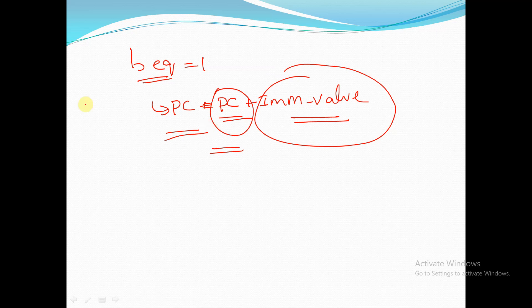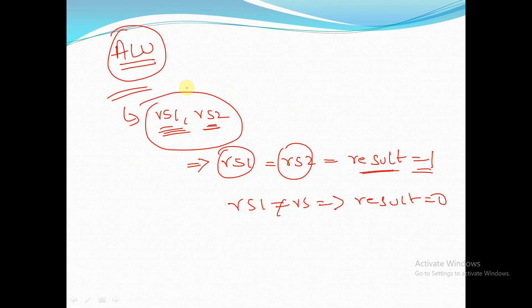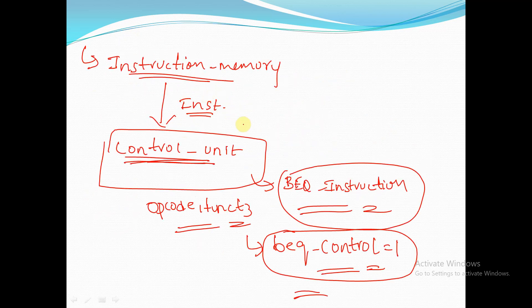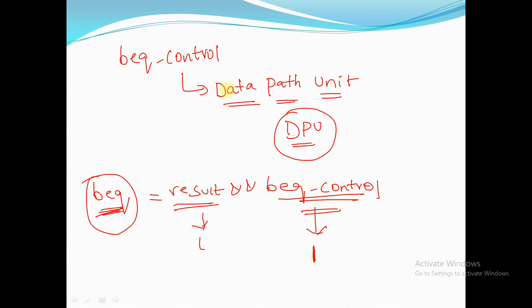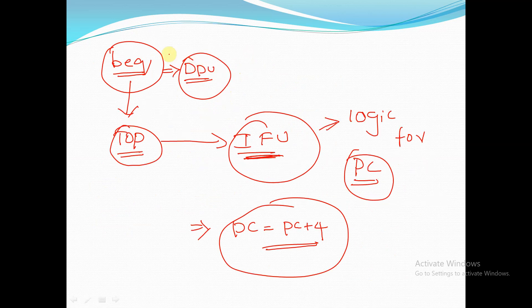This is the data flow for the branch equal to instruction. If you are not clear on how the BEQ instruction executes, please re-watch this video. It can be a little confusing at first, but watching again and trying the code will help. You can also leave a comment or contact me on Telegram.